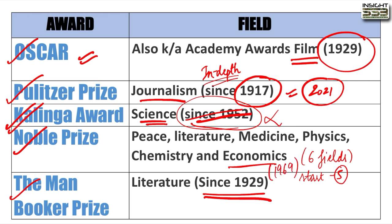The Economics Nobel Prize was first awarded in 1969, but it was instituted in 1968. Nobel Prize is given for the greatest benefit to humankind — in peace, literature, medicine, physics, chemistry, and economics — as per Alfred Nobel's will.